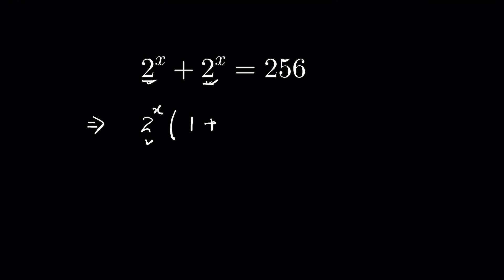Again, 2 to the power x—1 plus 1 is 2. When we remove the bracket, there is a hidden multiplication, so we can write it as 2 to the power x times 2 is equal to 256.